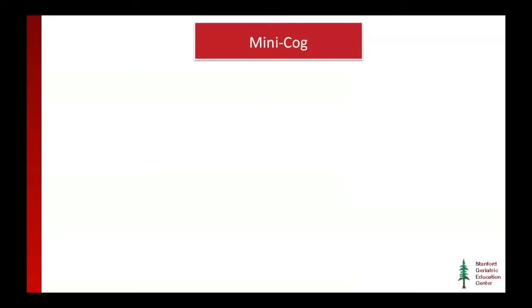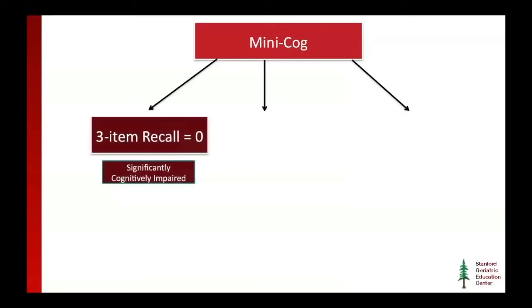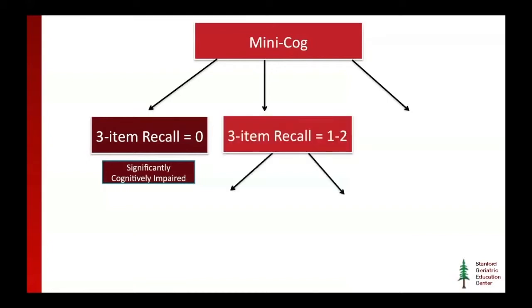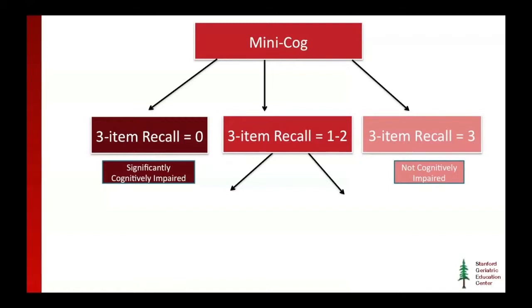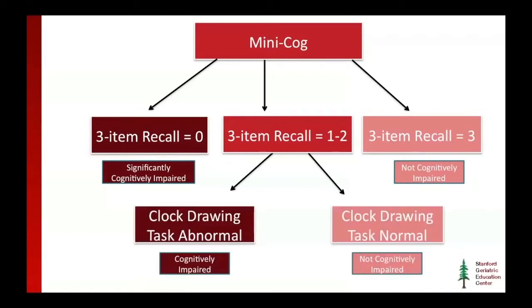Here is how the scoring works for the MINI-COG. A person who gets all three-item recall wrong is significantly cognitively impaired. Those who get all three right are not cognitively impaired. If they get one to two right and have an abnormal clock drawing, they would be referred for further workup. If they get one to two items incorrect but their clock drawing is normal, we consider them not cognitively impaired but would watch and wait and refer for a secondary evaluation in a few months.